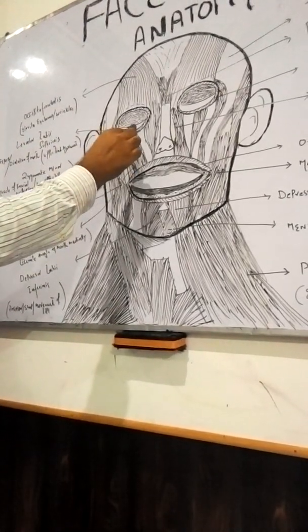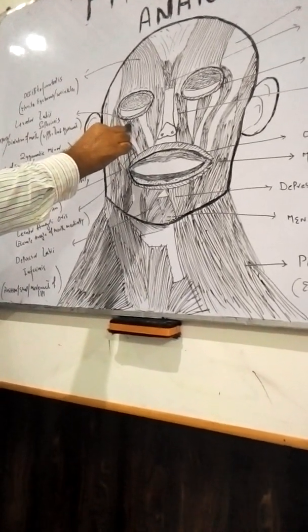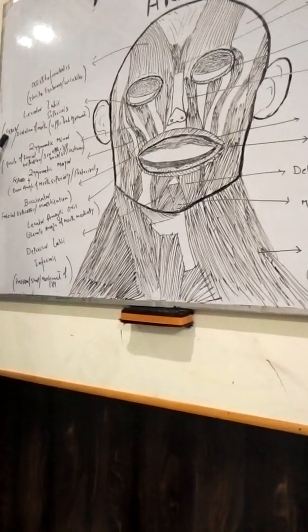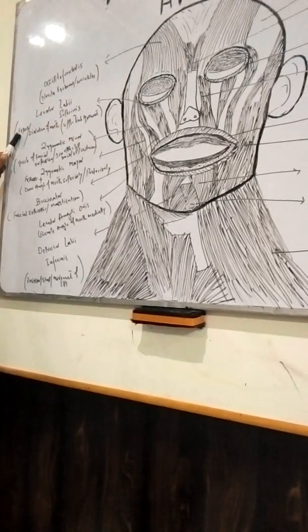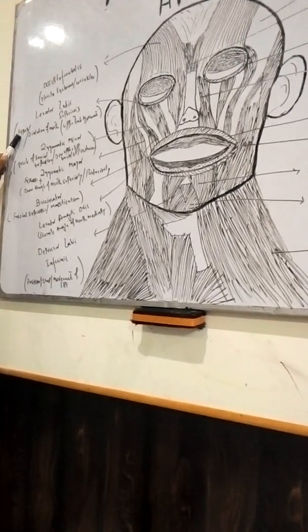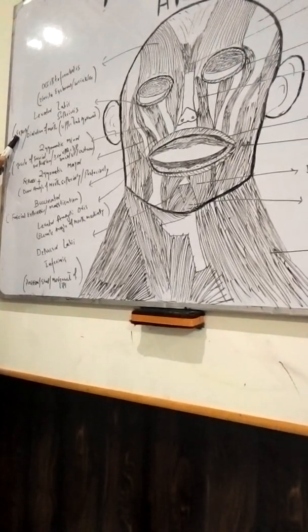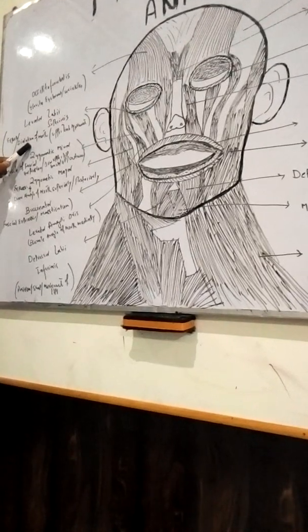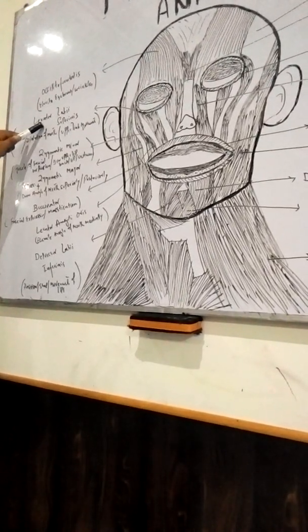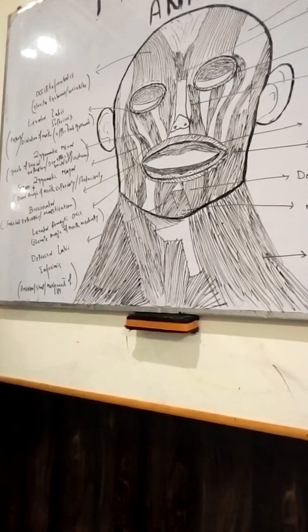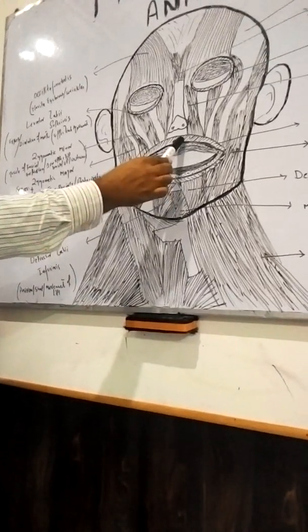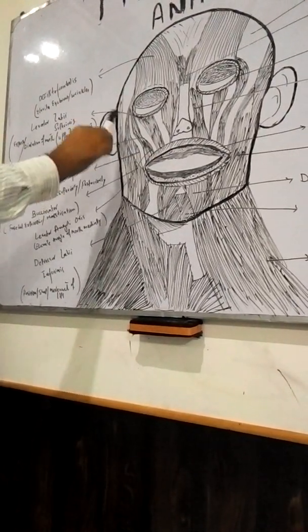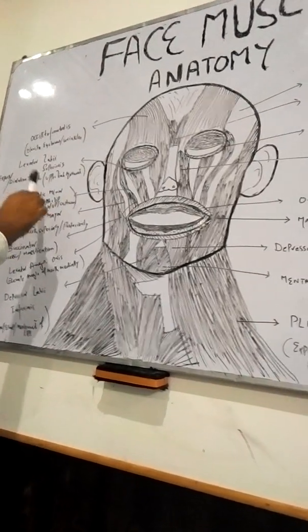The second muscle on this side is levator labii superioris, located in the superior region just below the eye. It has three main functions: first, it expresses facial expressions such as horror, surprise, and sadness; second, it helps in dilation of the mouth when you open it; and third, it is responsible for upper lip movement.